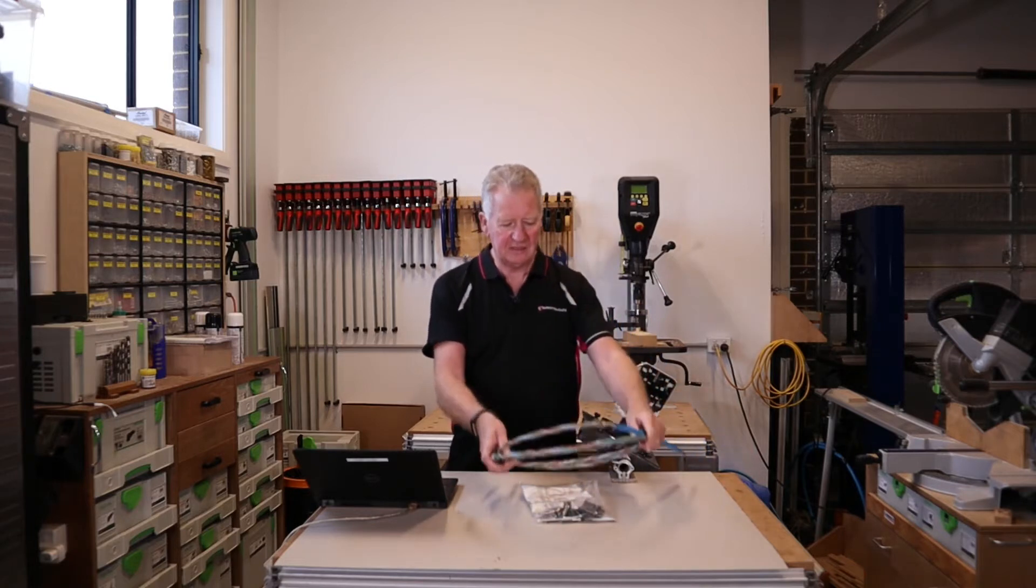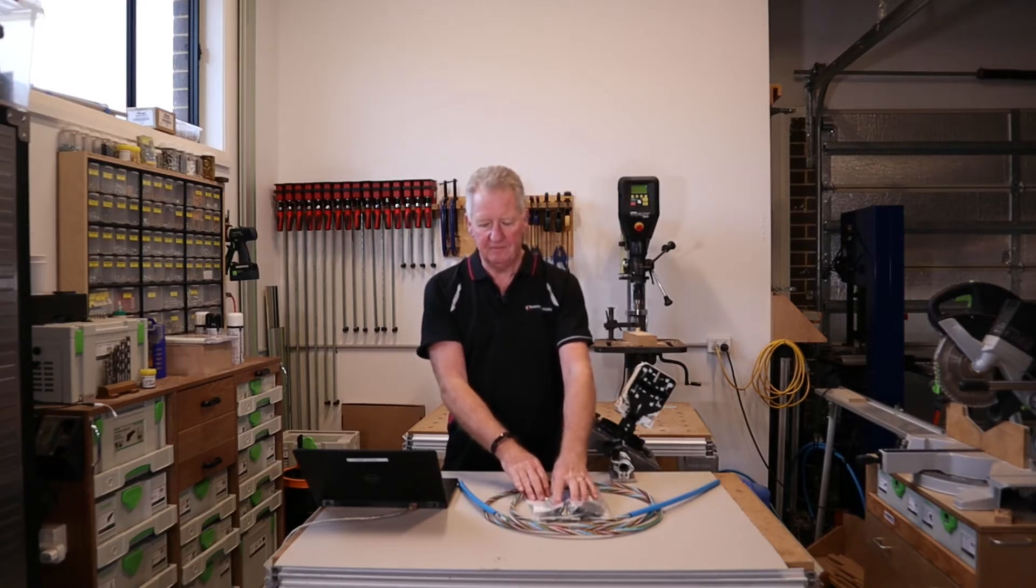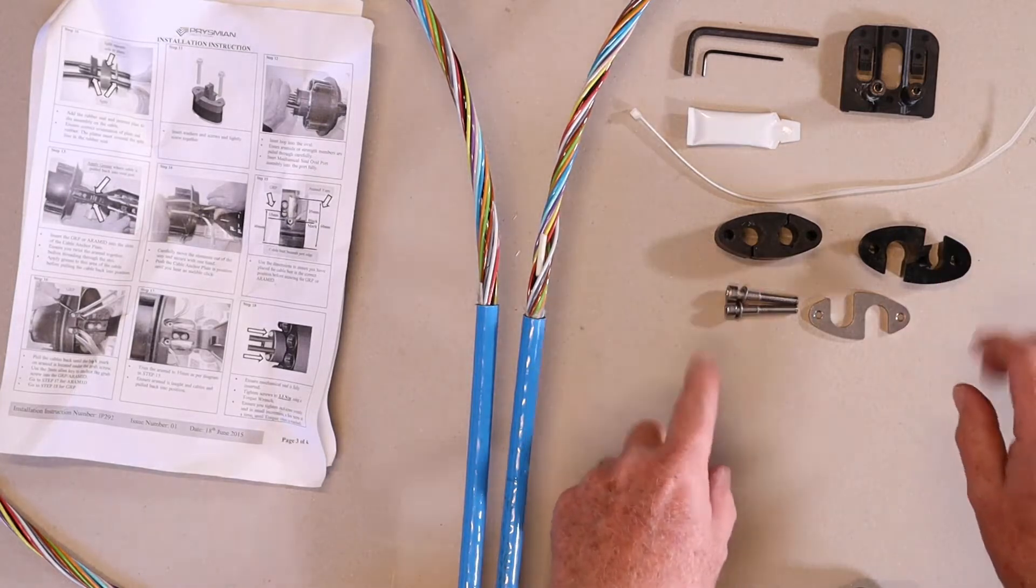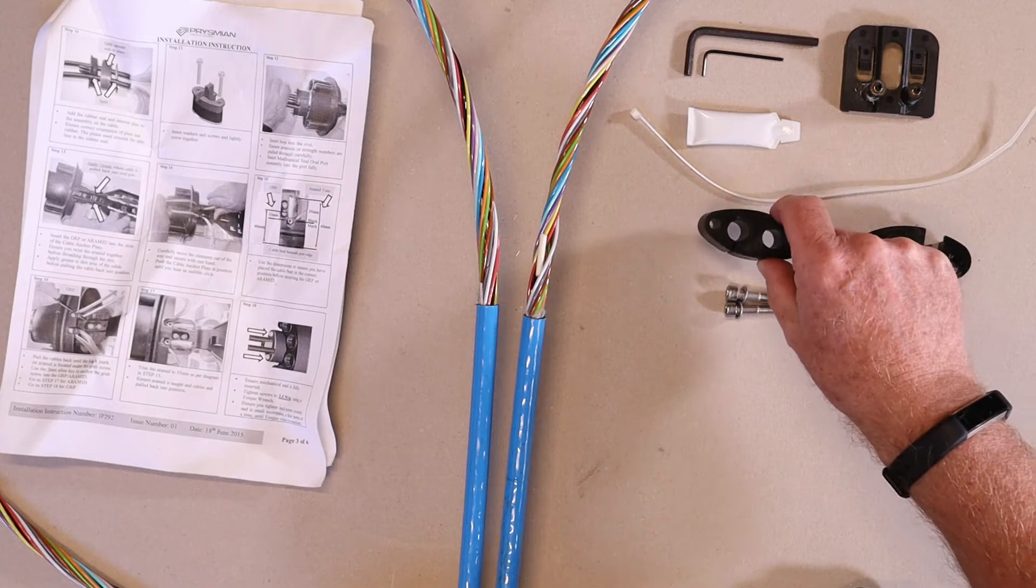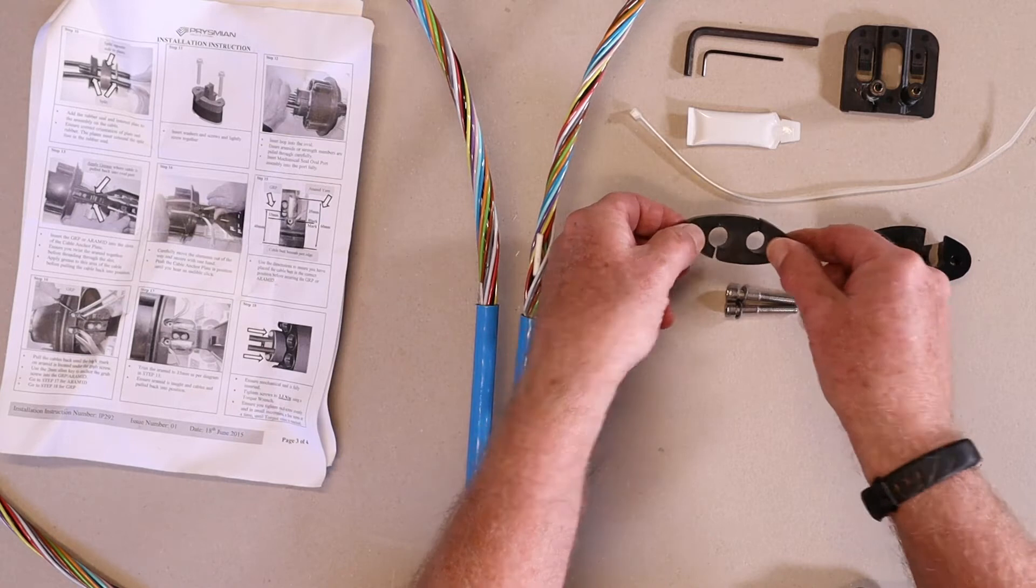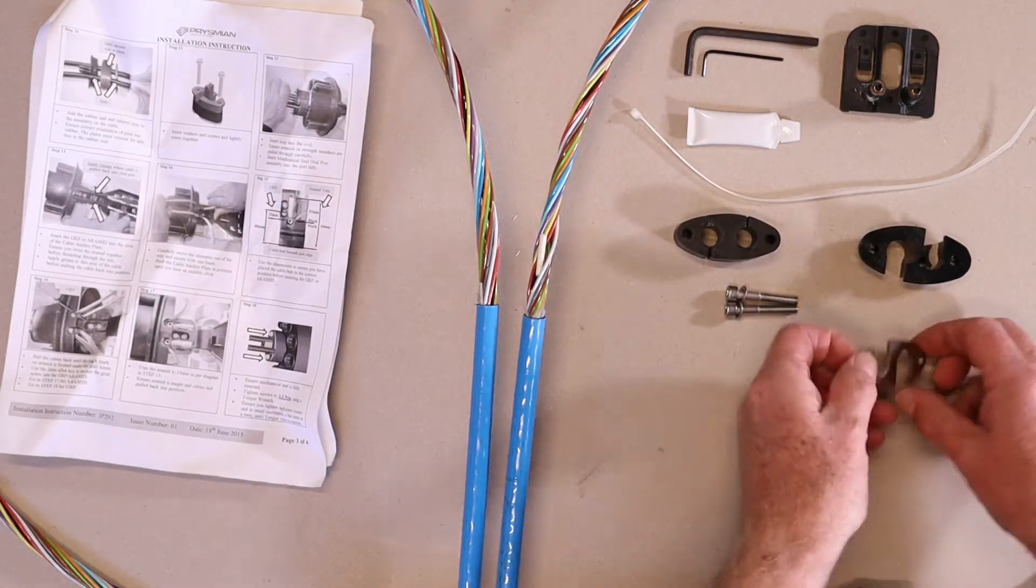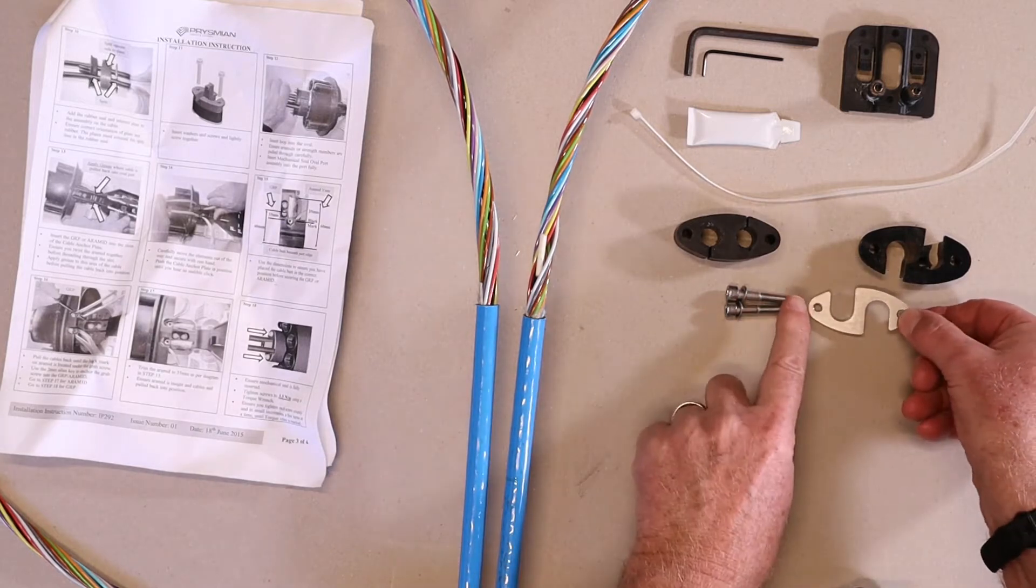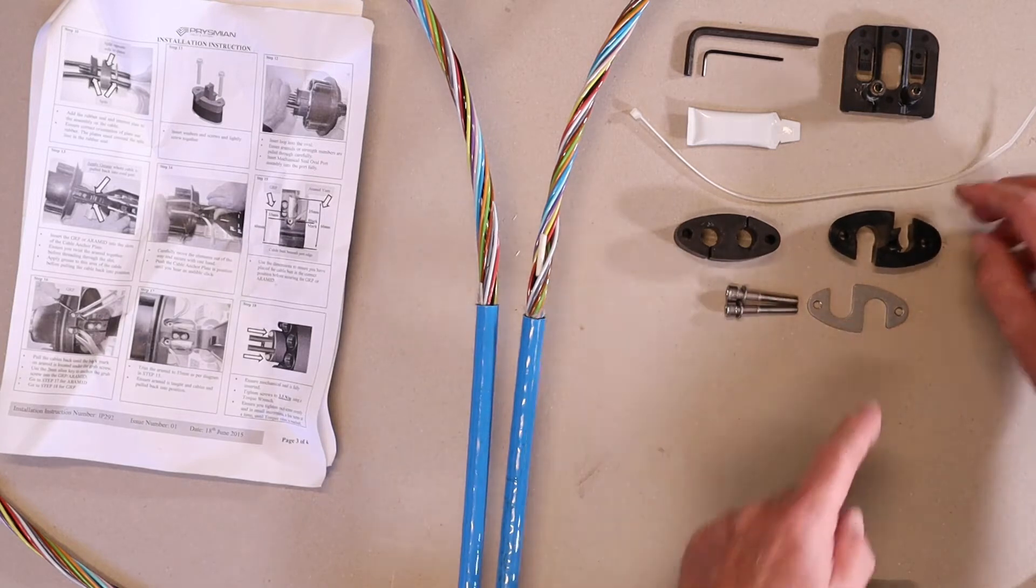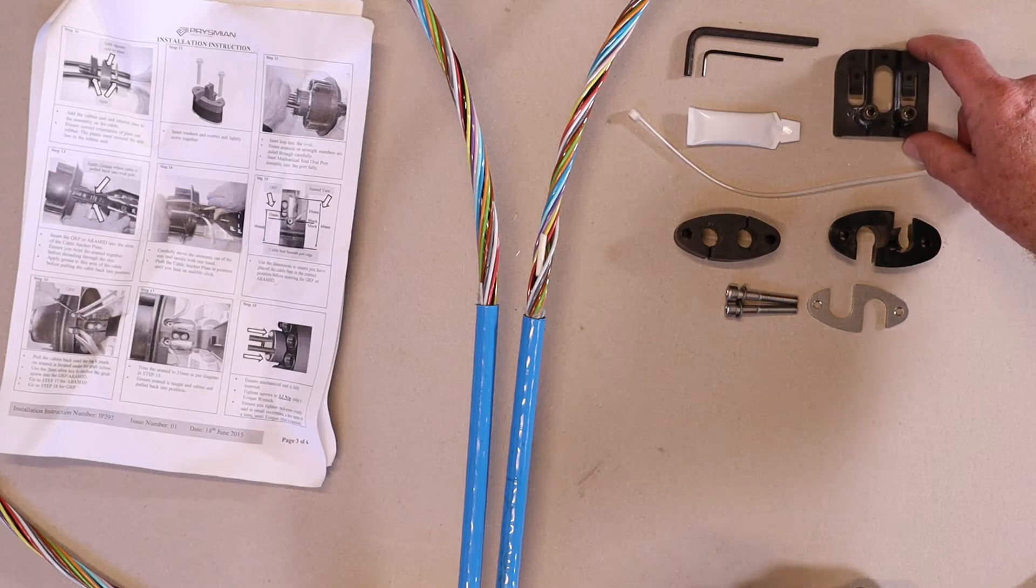So I'll show you how to start installing this gland kit onto the cable. I've laid out all the parts here so you can see what's in the kit. We've got the rubber seal itself and notice it's split - it's important which way around these splits go. There's the stainless steel compression plate that the screws fit into, the compression part at the bottom, and the GRP anchor that fits up inside the base of the joint closure.